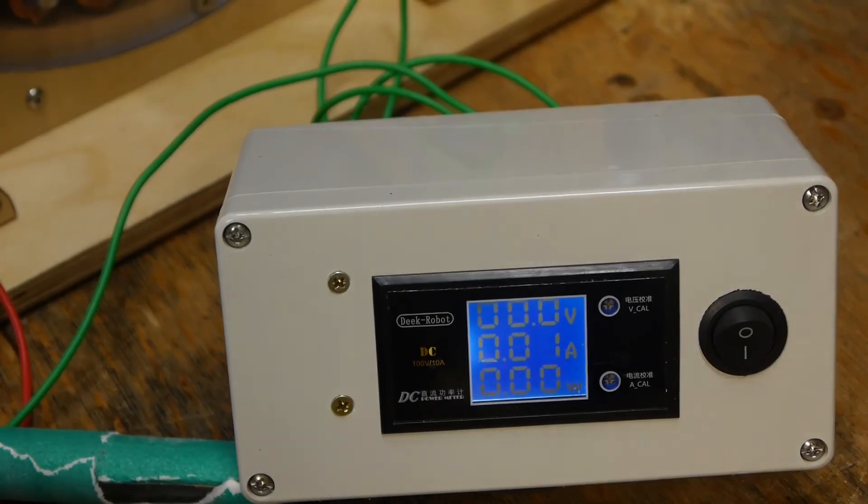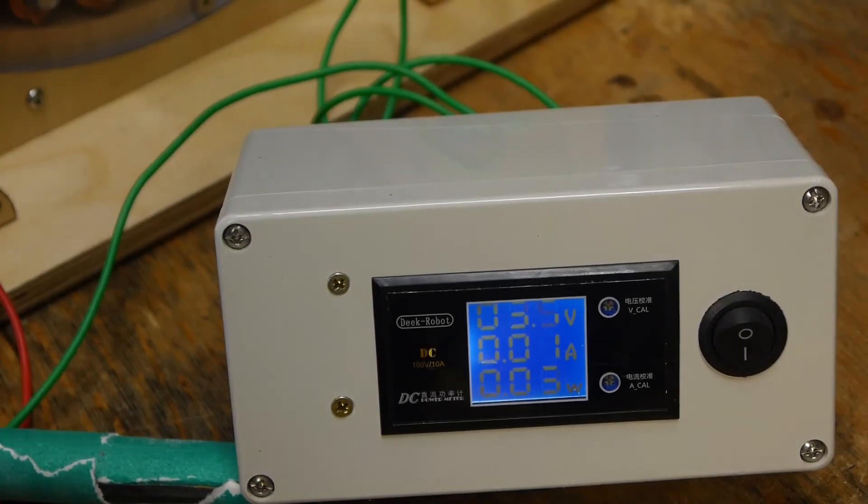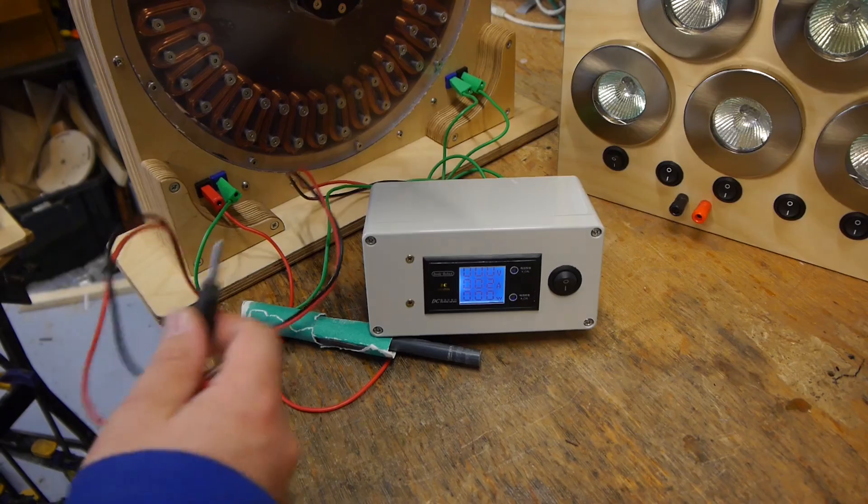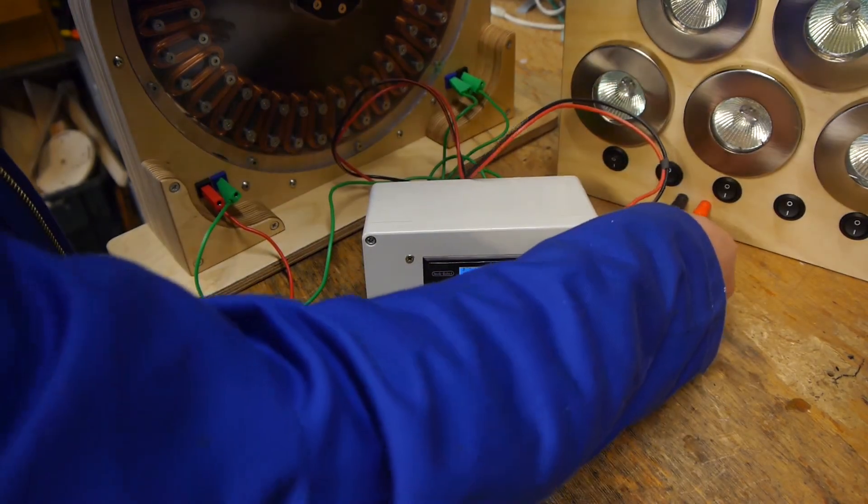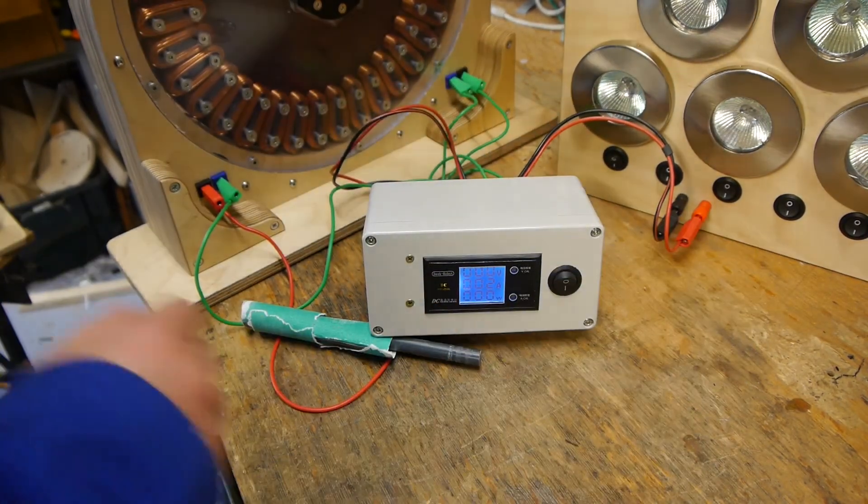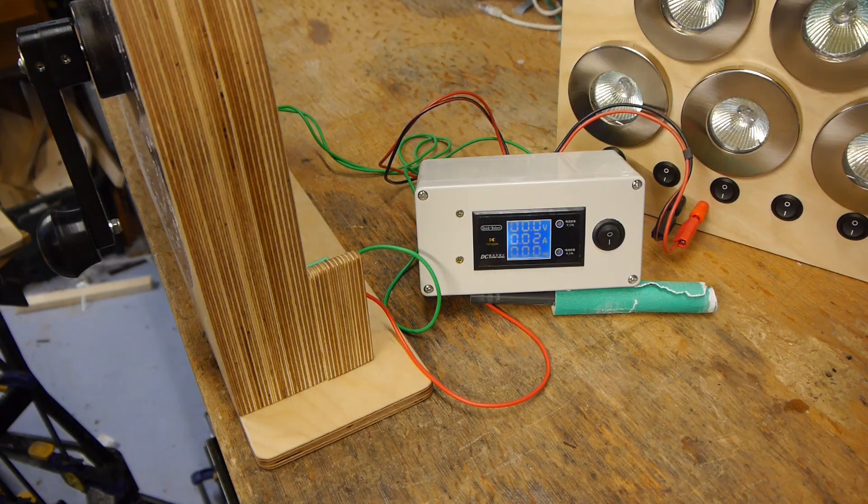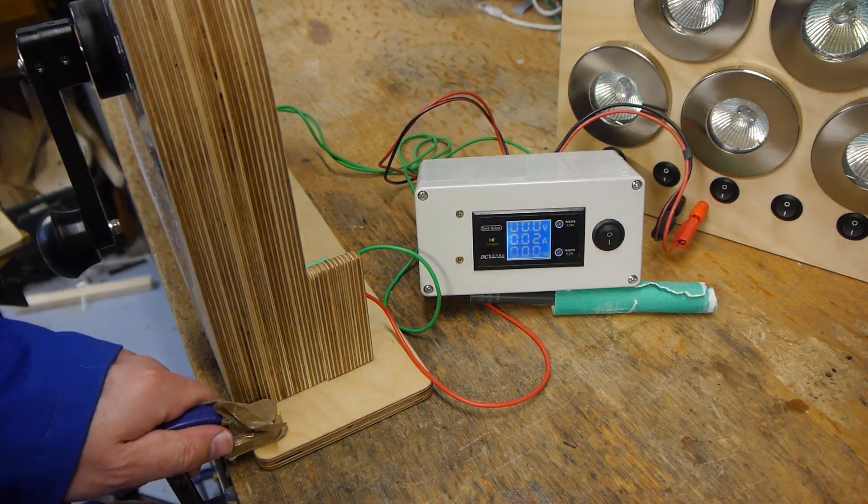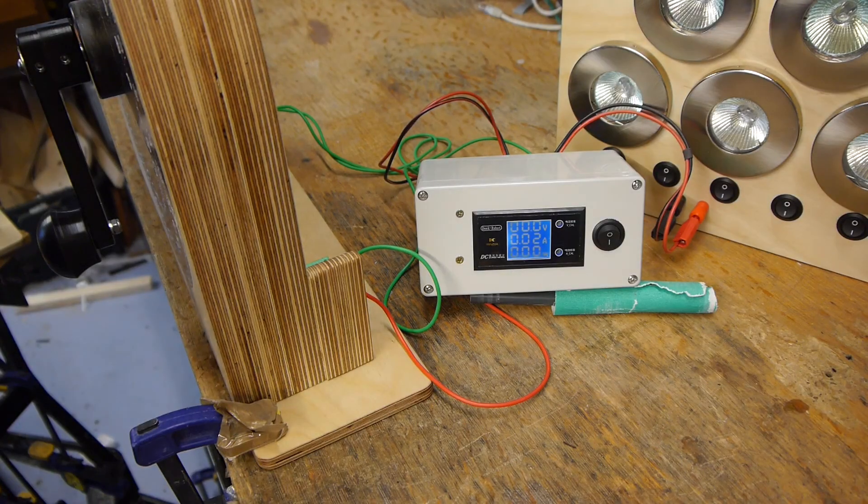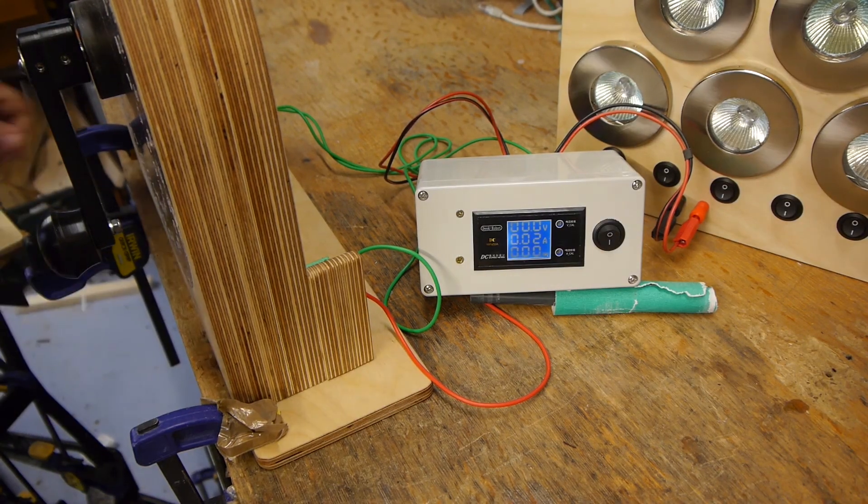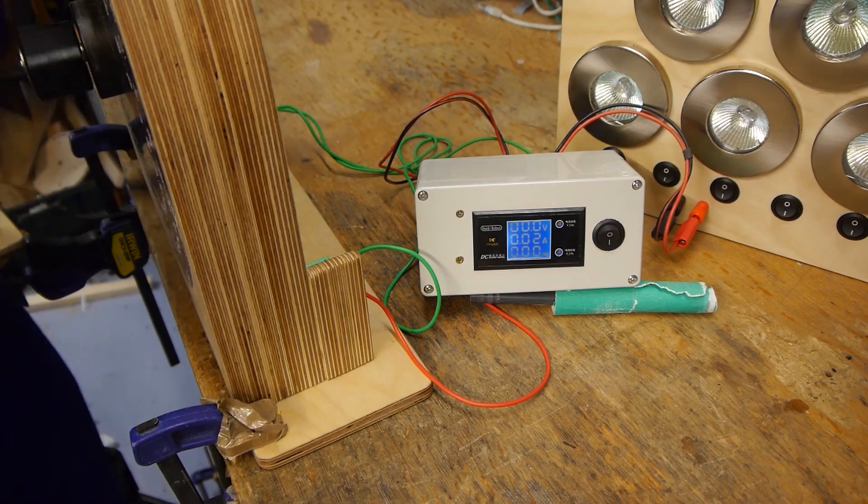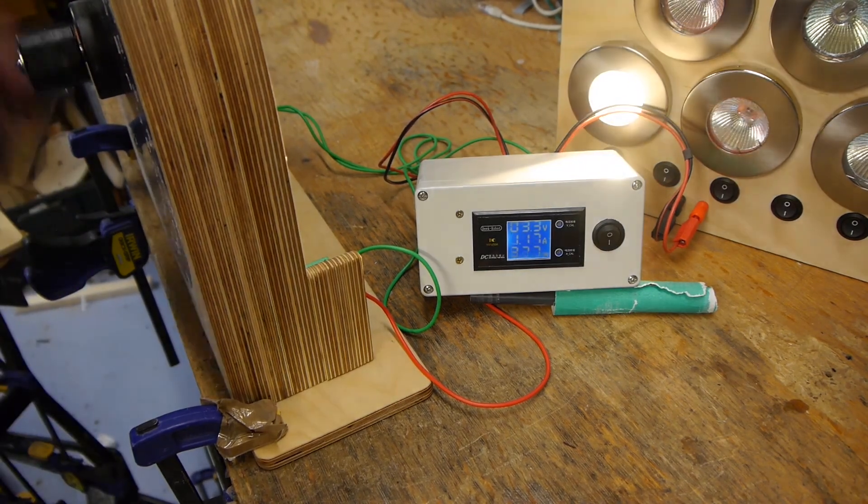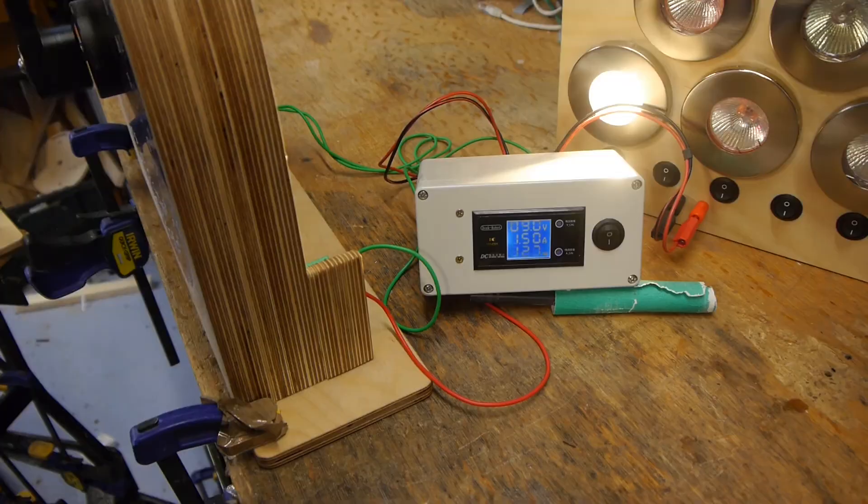And as we turn the generator, we start to generate a voltage. But currently there's basically no current. If we plug a load into the output of the rectifier, and we clamp the generator to the table just with some woodworking clamps, we can generate some electricity and light a light.